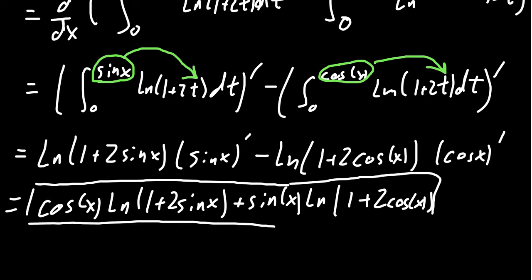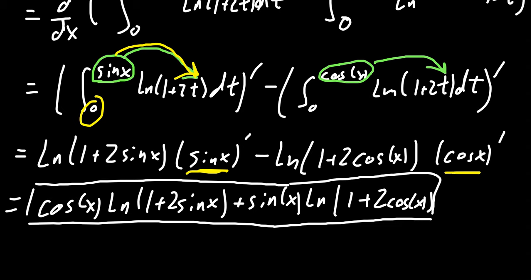That represents the worst case scenario when taking derivatives of integral functions. Make sure there's a constant on the bottom, whatever's on top gets plugged in for t, and don't forget your inner derivatives. The Fundamental Theorem of Calculus Part 1 is quite powerful for calculating derivatives of area functions. We'll talk about FTC Part 2 in lecture 47 — stay tuned. If you have questions, post them in the comments and please like and subscribe. See you next time!